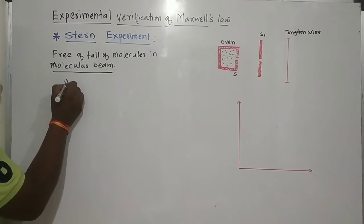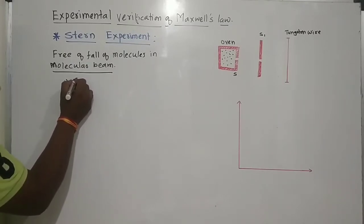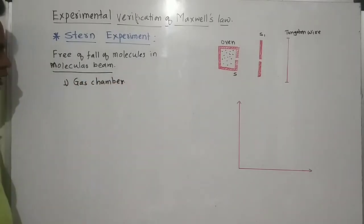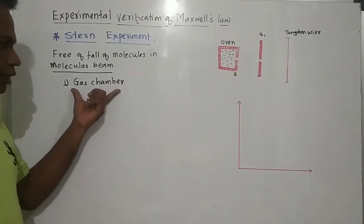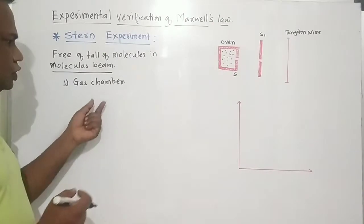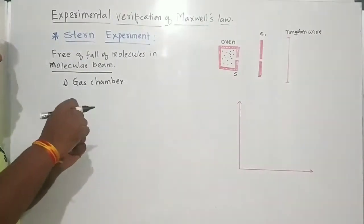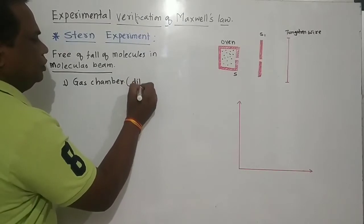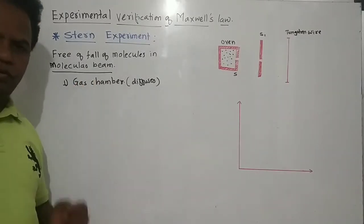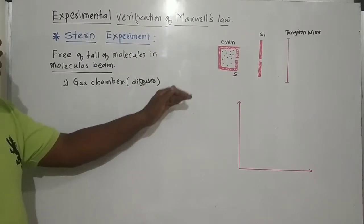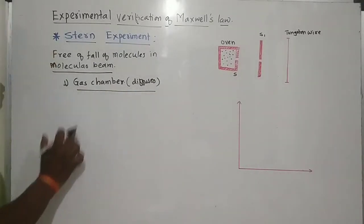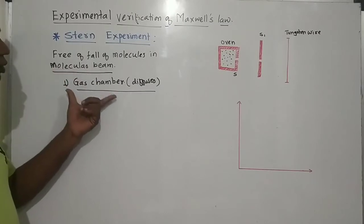One method uses a gas chamber. When we have gas molecules in the gas chamber and the pressure inside is very low, the gas diffuses into the environment and the molecules come out. These molecules can be observed under the fall of gravitation. This is one method by which one can obtain a molecular beam of gas molecules.